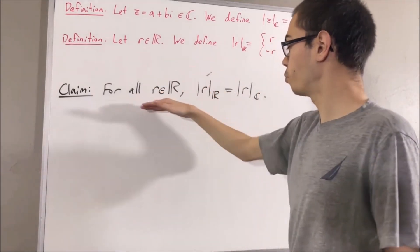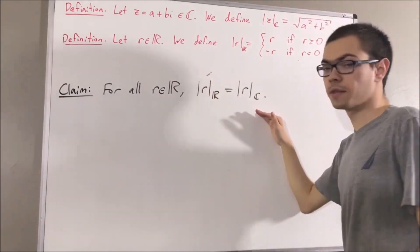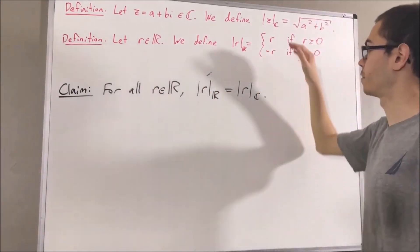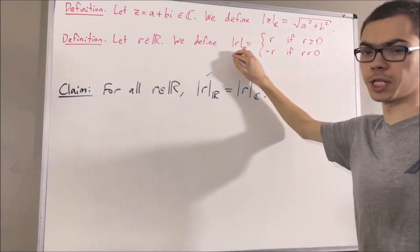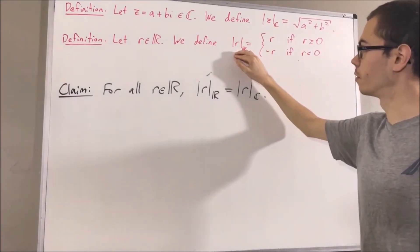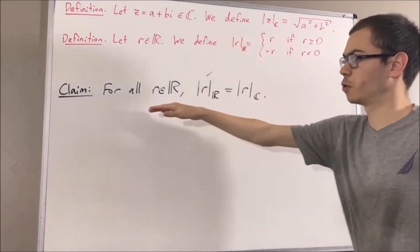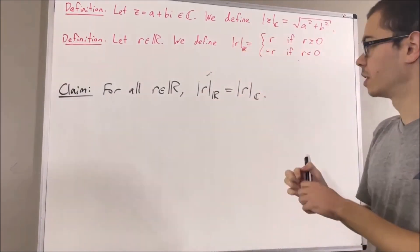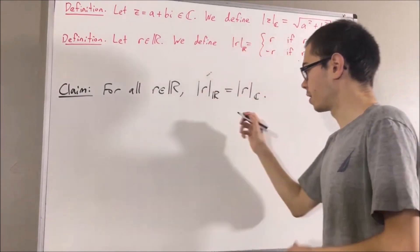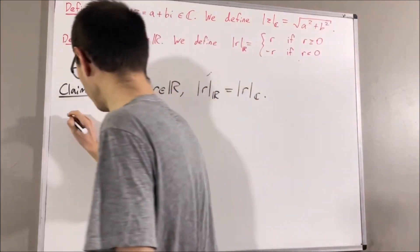If we can prove this, then this means we don't have to distinguish our notation here. I'll explain why after we prove this. But in any case, how do we prove this?